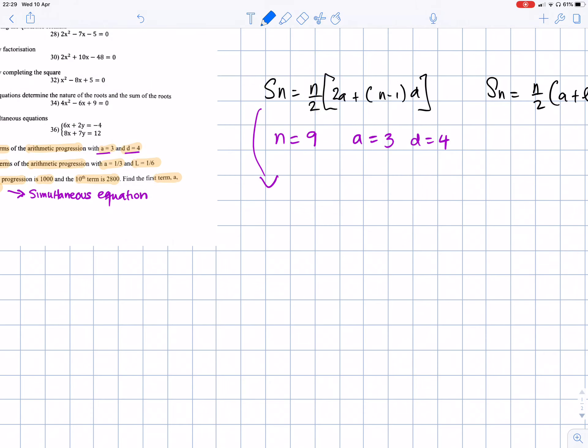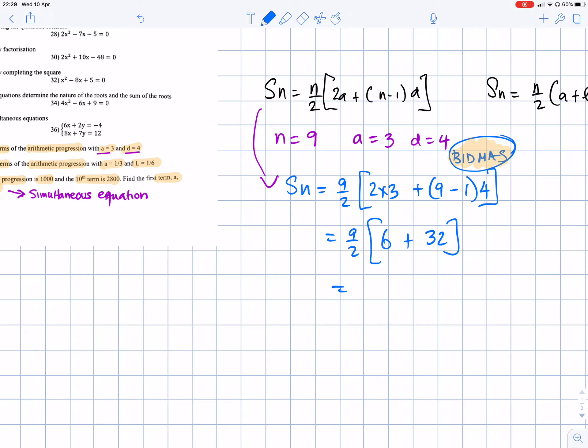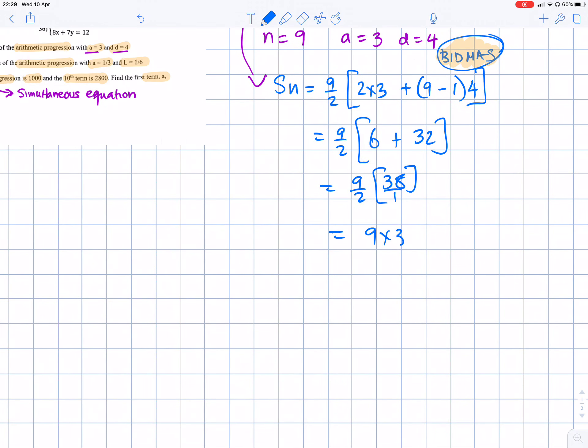A equals three and d equals four. So all we do is take this equation and just plug in the values that were given. So n divided by two, two times three because a is three plus n is nine minus one, and d is four. Which becomes nine divided by two, two times three. We're going to use BEDMAS to work out first of all what's inside the brackets. So two times three is six plus nine minus one is eight, eight times four is thirty two. So this becomes nine over two, six plus thirty two is thirty eight.